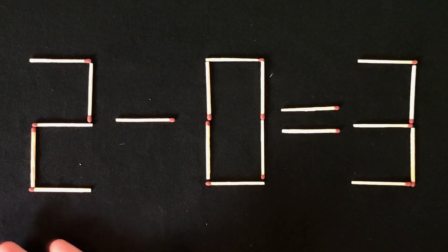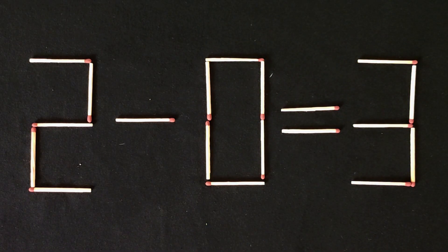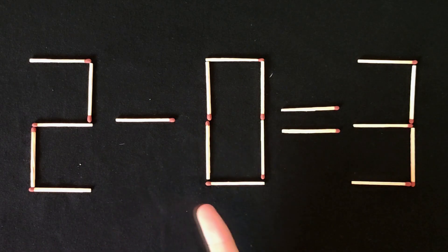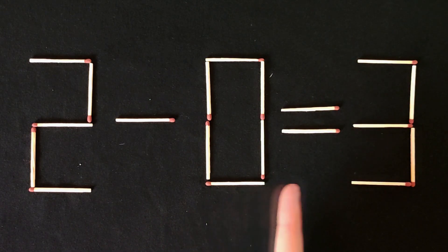Hi guys, in today's video we have a puzzle like this. 2 minus 0 equals 3. That's wrong.